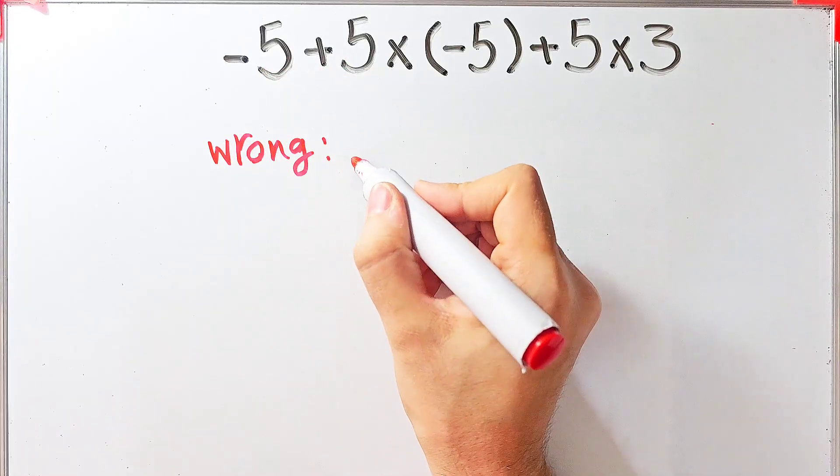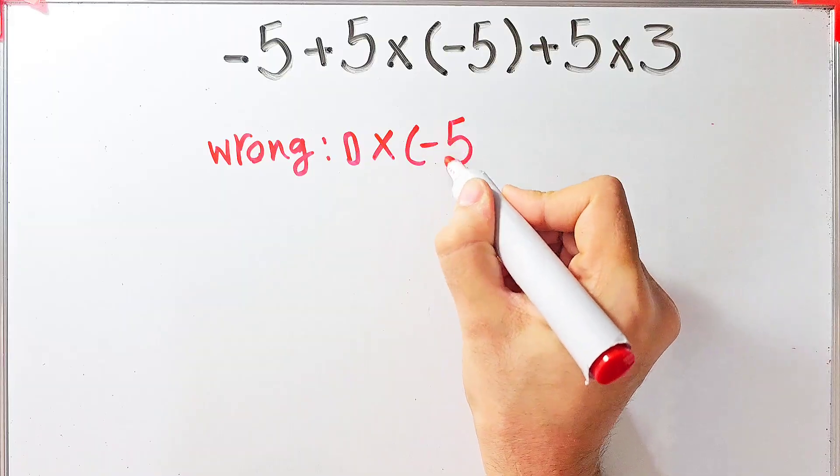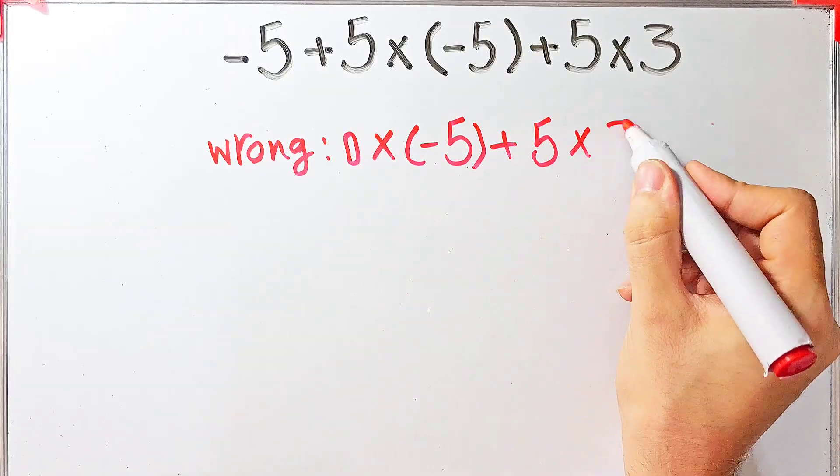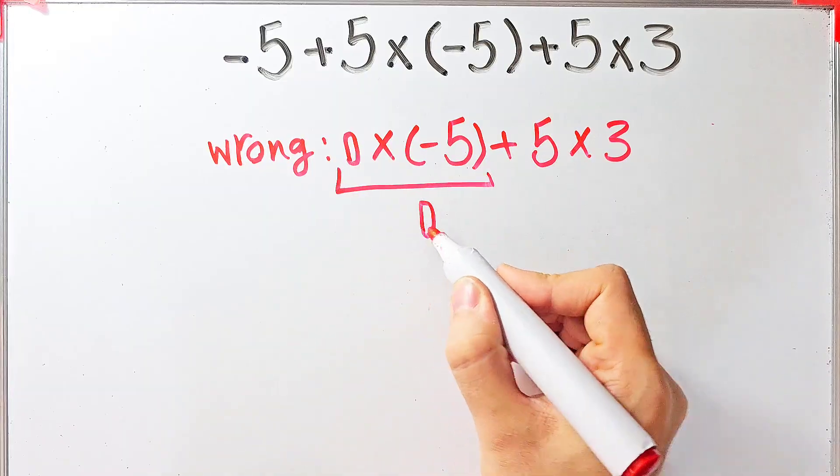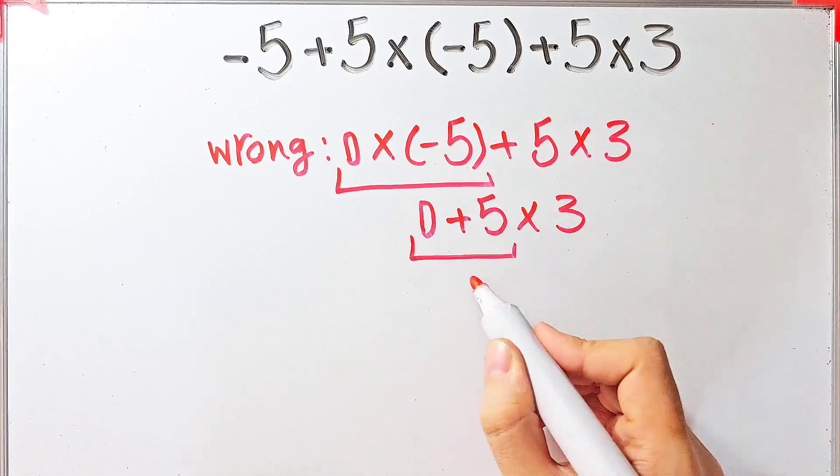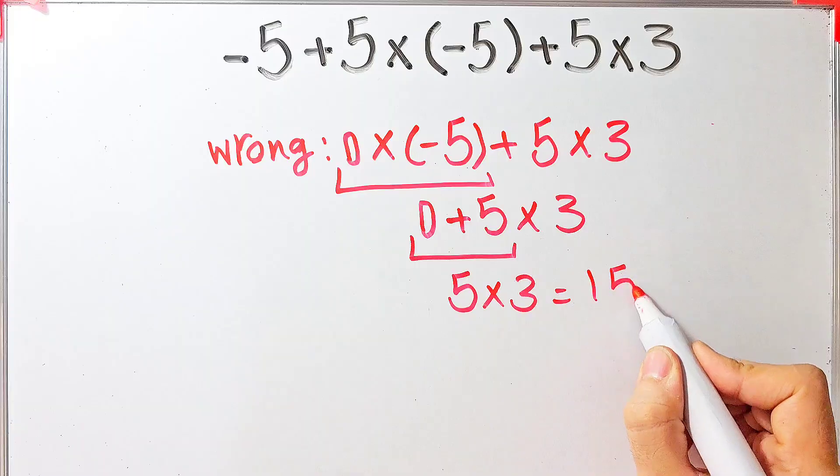For example, some people solve this question like this: negative 5 plus 5 equals zero, zero times negative 5 plus 5 then times 3. Zero times negative 5 equals 0, 0 plus 5 then times 3. 0 plus 5 equals 5, and 5 times 3 equals 15.